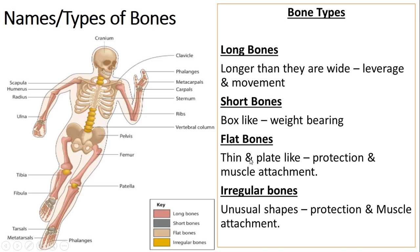You also have flat bones - these are thin and a little bit like plates. For example, your sternum is a flat bone, and they allow for protection but also allow lots of muscles to attach to your skeleton. The final type are irregular bones - they're generally unusual shapes, like your vertebrae. They allow for protection, as your central nervous system runs through there, but also provide lots of muscle attachment points. Make sure you know the names of the different bones, what type they are, and think about how they are used in sport.